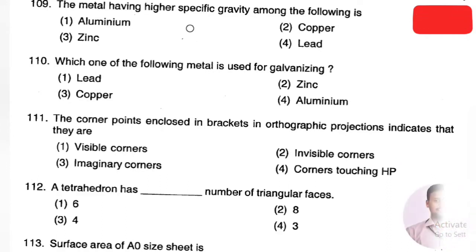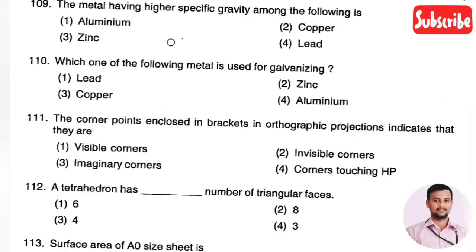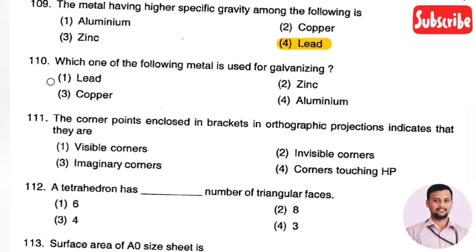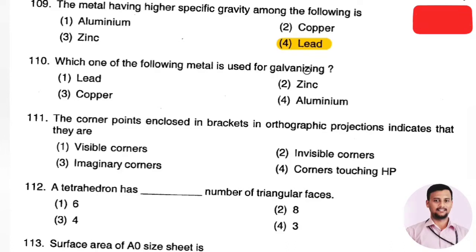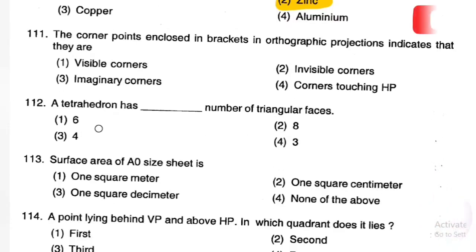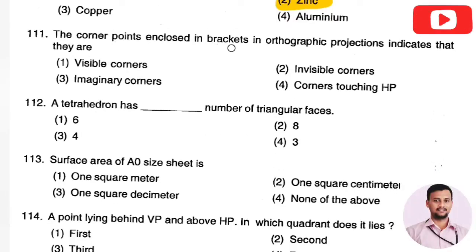The next question: which metal has the higher specific gravity among aluminum, copper, zinc, and lead? The answer is lead — Option 4. The next question: which metal is used for galvanizing? Options are lead, zinc, copper, and aluminum. The answer is zinc, Option 2.